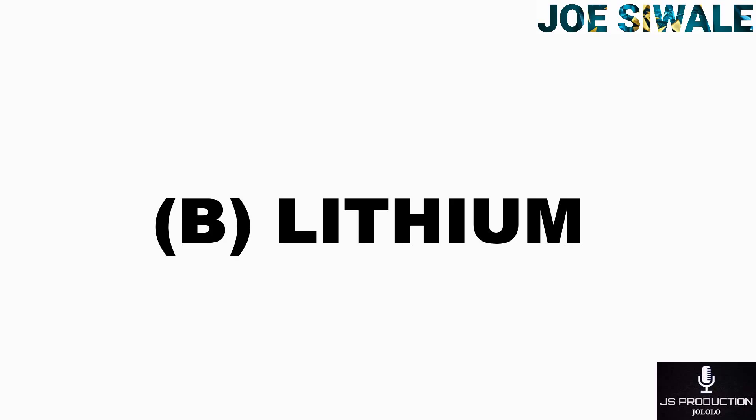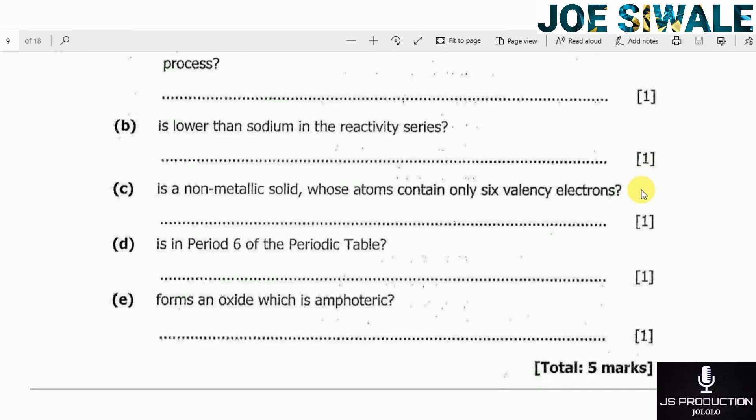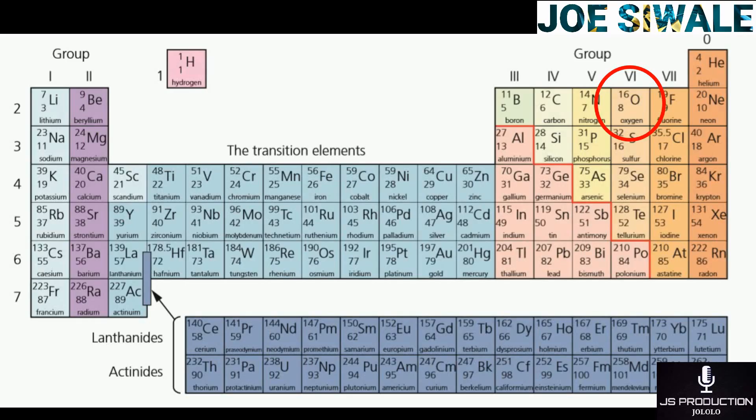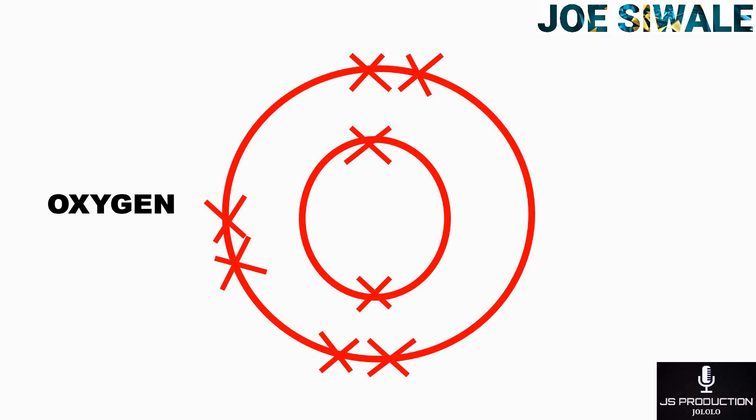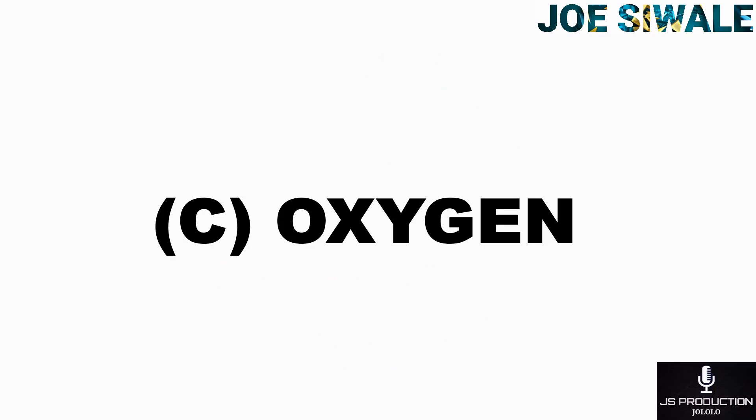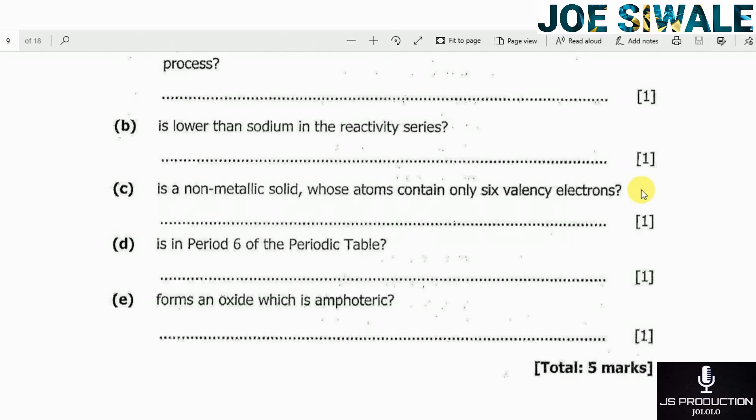Question C reads: is a non-metallic solid whose atoms contain only 6 valence electrons? If you consider elements that are in group 6, oxygen is found in group 6, and the reason why oxygen is found in group 6 is because oxygen has 6 valence electrons in its outermost shell. So my answer on question C is oxygen.